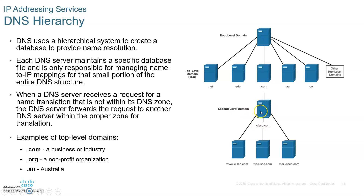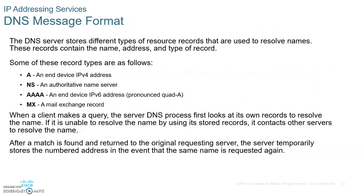Then you get the second-level domain — for example, cisco.com. Under that you might have FTP.cisco.com for file downloads, or HTTP, or mail. Inside the DNS there are records. A record is a name associated with an IP address — so cisco.com mapped to an IP address is a record, IBM.com with an IP address is also a record.